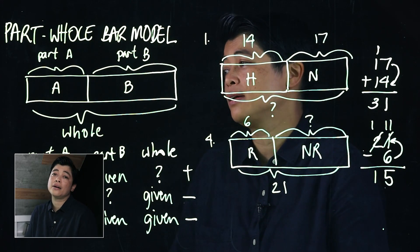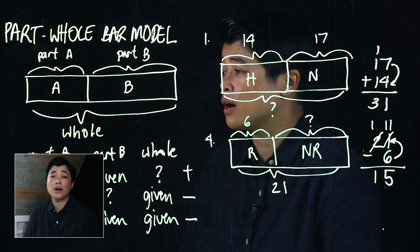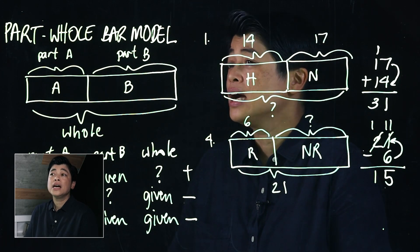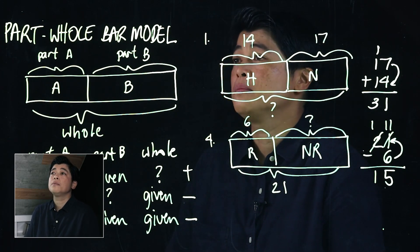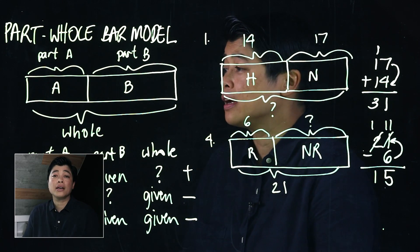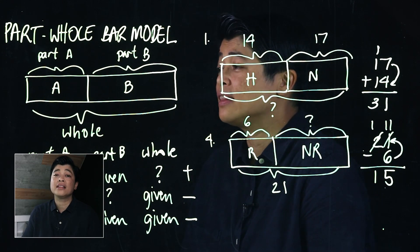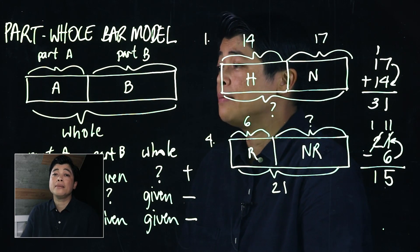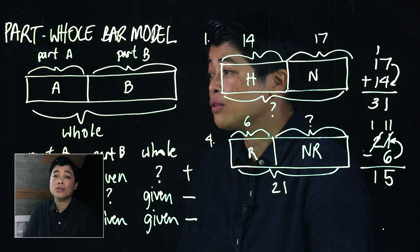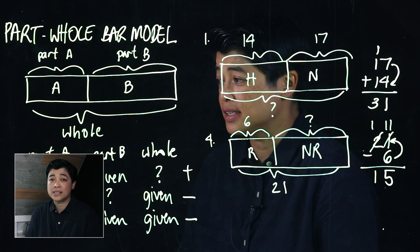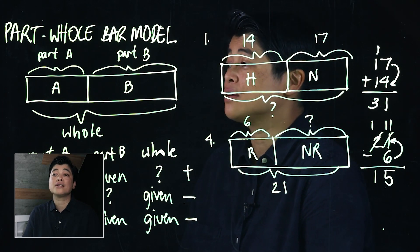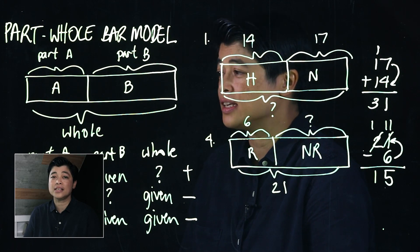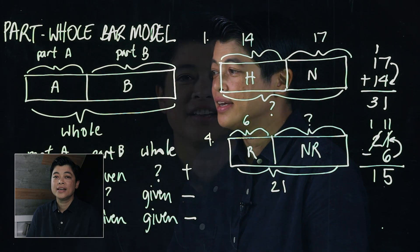Parents, it's important that we are able to show our kids how to draw a part-whole bar model. It's important for them to identify the parts and the whole. The basis of the equation is dependent on where the question mark is. If the question mark is on the whole, that's addition. Anything else is subtraction. That concludes Lesson 1 of Chapter 4. See you in the next lesson.